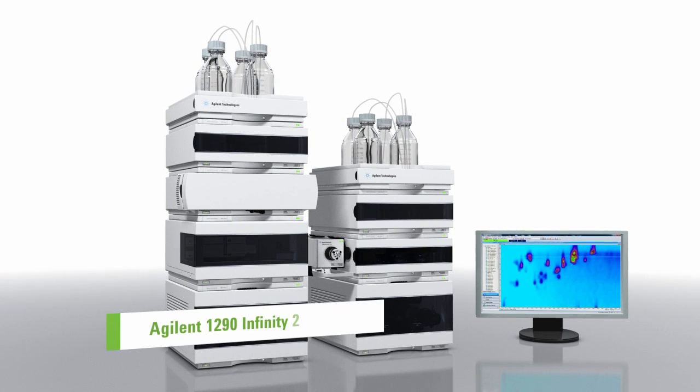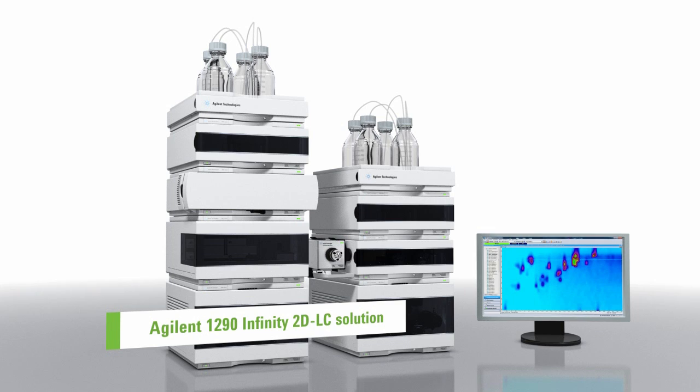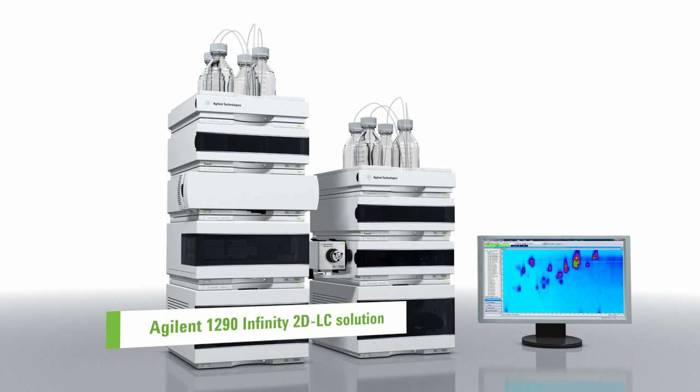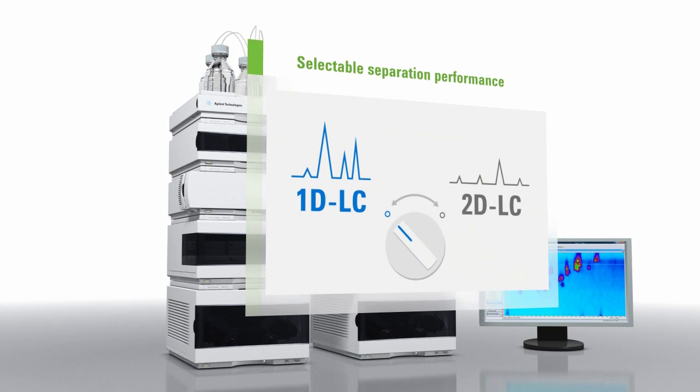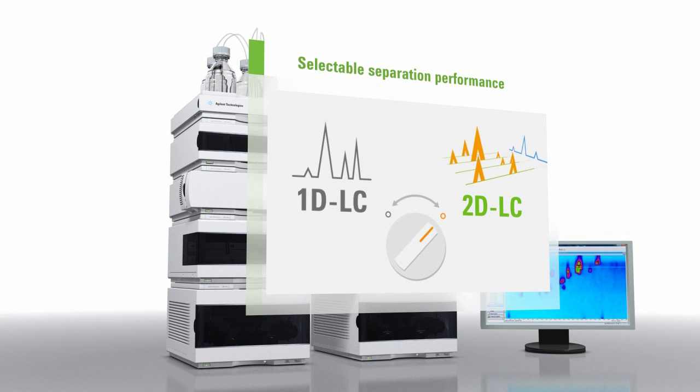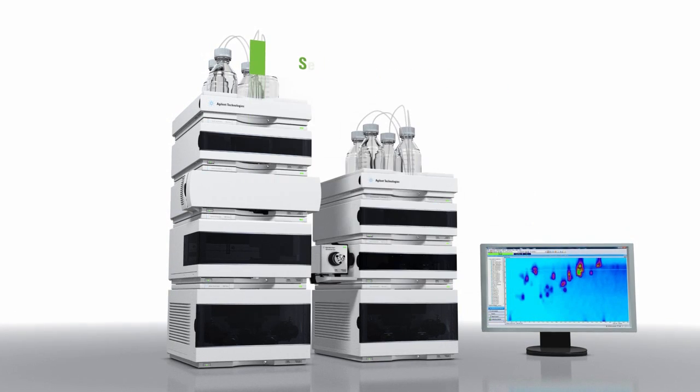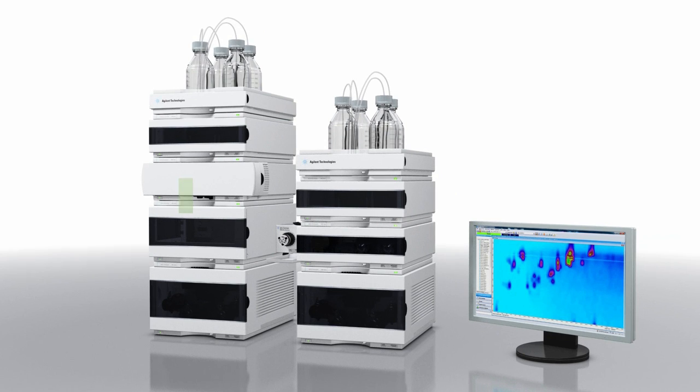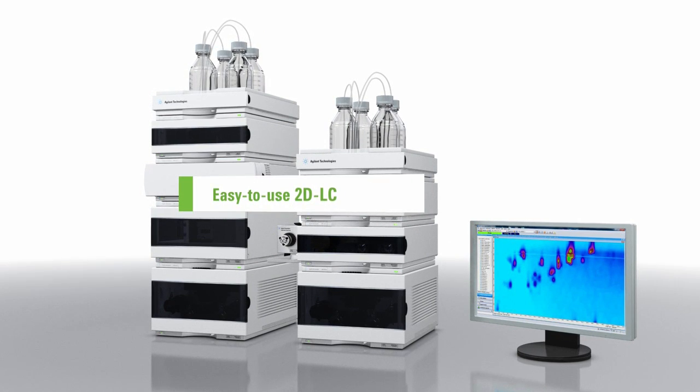The Agilent 1290 Infinity 2D LC solution gives you the separation performance you need to solve this challenge in a single system. At the flip of a switch, you can select between single-dimension UHPLC and the ultimate power of two-dimensional liquid chromatography. What's more, Agilent's solution takes you to a new dimension of ease of use.